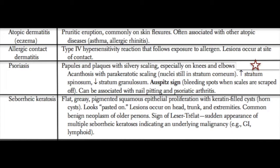Next we have seborrheic keratosis — flat, greasy, pigmented lesions that represent epithelial proliferation with large amounts of keratin-filled cysts. Very common in the elderly, they have a characteristic brownish, scaly, 'pasted on' appearance, almost as if someone placed a little brown circle on the patient's skin. They usually occur on the head or trunk and are benign.